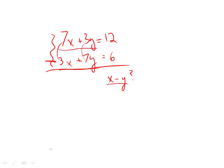Let's make this a big subtraction problem. So we get 7x minus 3x gives us 4x. 3y minus 7y up here gives us 4y, but it gives us minus 4y. And then finally 12 minus 6 gives us 6.